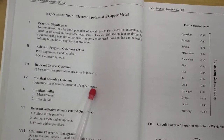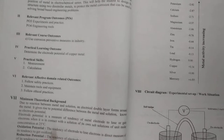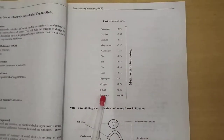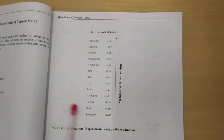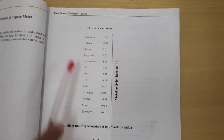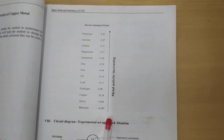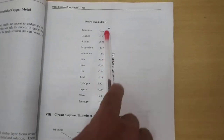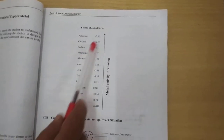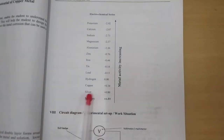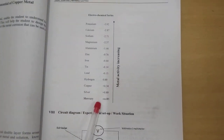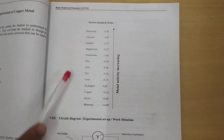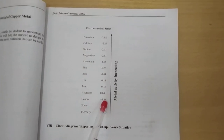This potential developed across the electrodes — in the electrochemical series we have discussed, at the bottom is mercury and at the top is potassium. Potential developed across the electrodes decreases up to the top. The top metal acts as the anode while the bottom metal acts as the cathode. That means zinc is acting as the anode while copper is acting as the cathode.